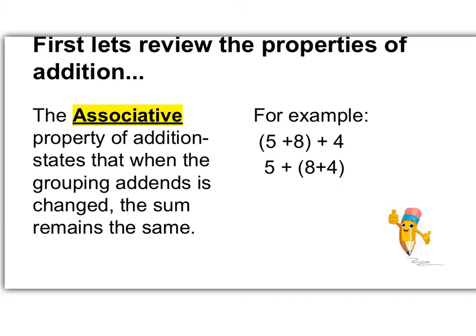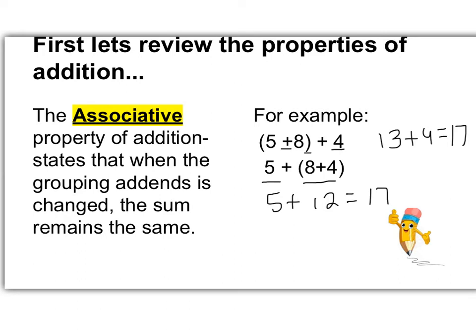The next one is the Associative Property of Addition. This states that when the grouping of addends is changed, the sum remains the same. Here you can see in the parentheses it's five and eight plus four, then five plus, in parentheses, eight plus four. The numbers are still the same, just the order is a little different. Five plus eight is 13, plus four equals 17. Then eight plus four is 12, plus five is still equal to 17. Go ahead and take a few minutes to jot these properties down.